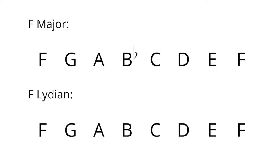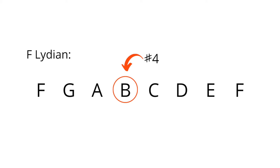Lydian is a major mode. If we compare it to its parallel major scale — parallel meaning the major scale that also has F as the root, that's F major — we can see how they compare. F major: F, G, A, B flat, C, D, E, F. F Lydian: F, G, A, B, C, D, E, F. So the point of difference is the B. F Lydian has a B, so compared to the parallel major key, it's a major scale with a sharp 4. And that B is the characteristic note — that is the heart of the sound of Lydian.